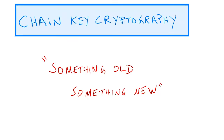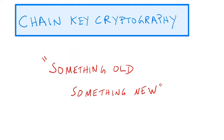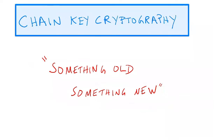So, like I said, I'm going to be talking about Chain Key Cryptography and I'll be giving an overview of what it is and what it's good for. That's the 'something old' bit, and then I'll be talking about the new developments and the new applications to integrating the Internet Computer with the Bitcoin network as well as Ethereum and so on. That'll be the 'something new' part.